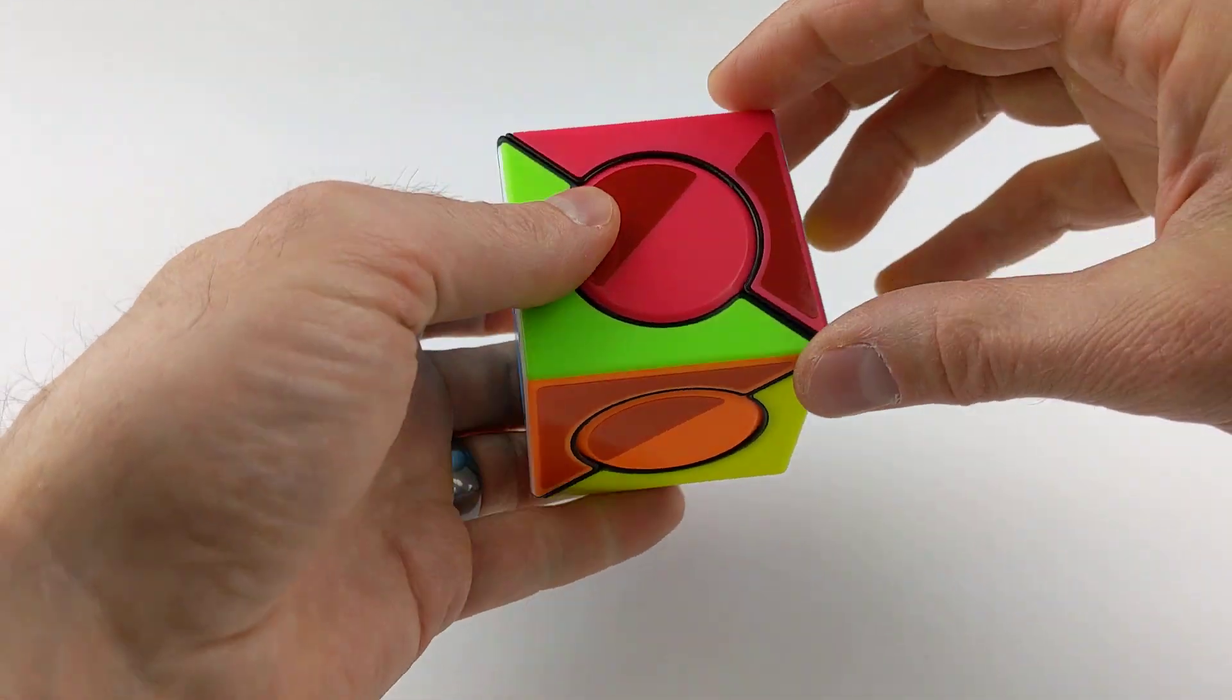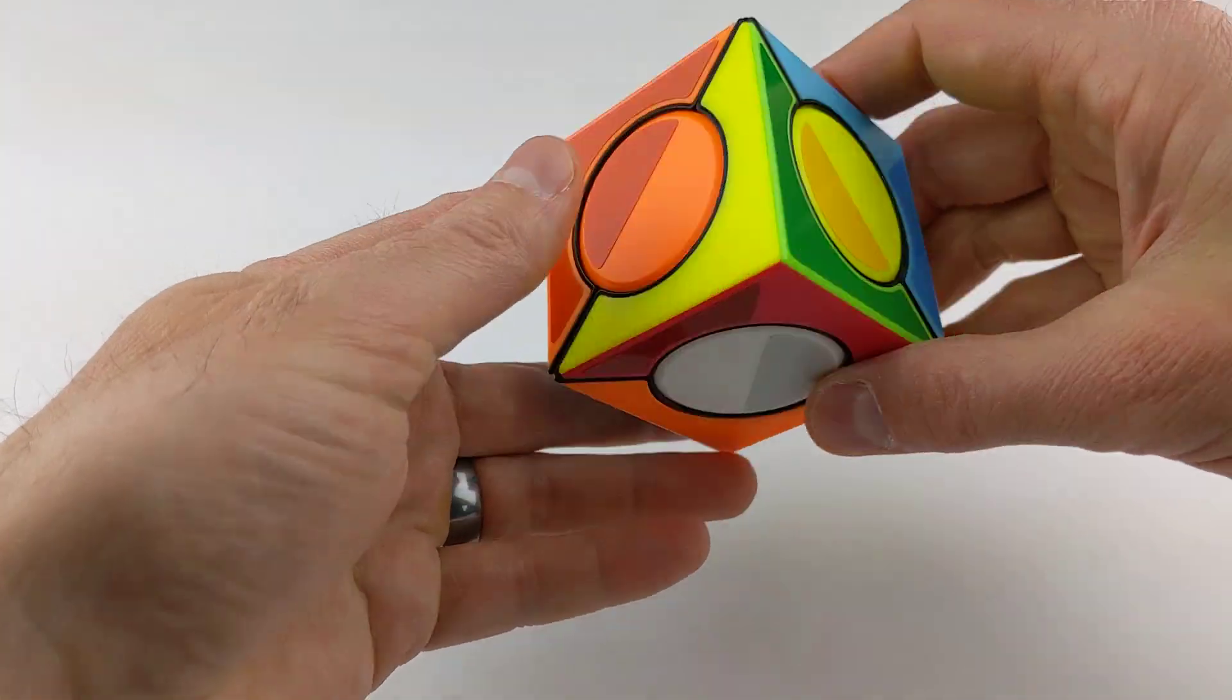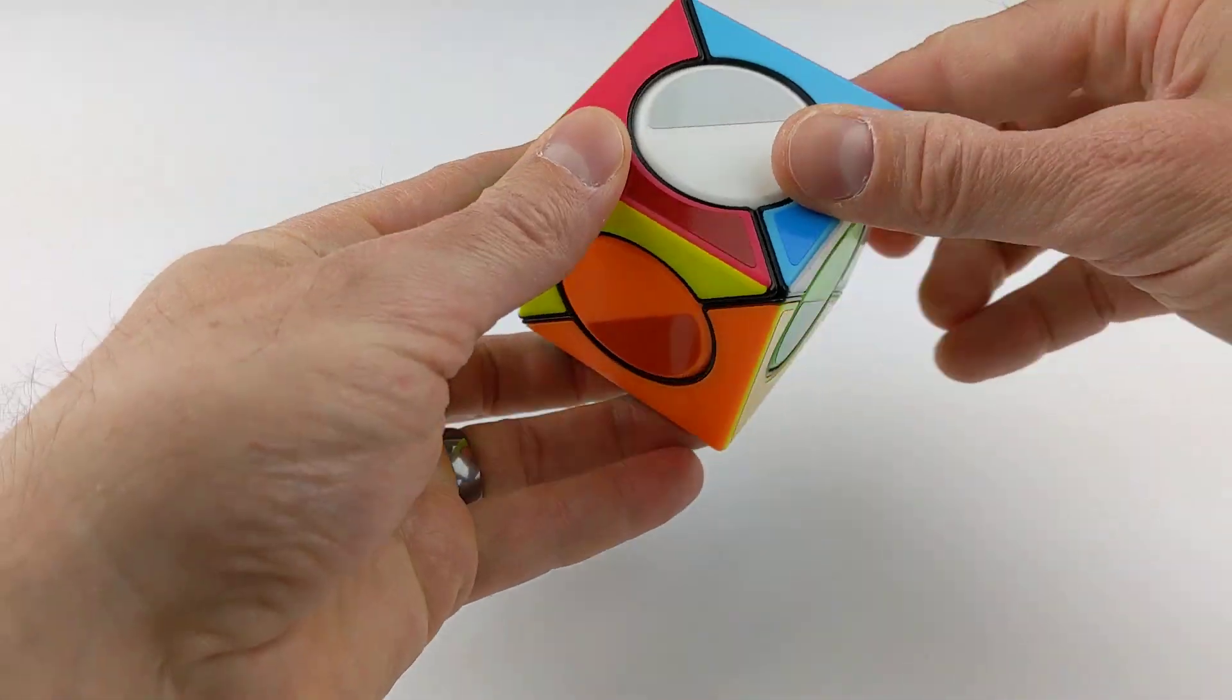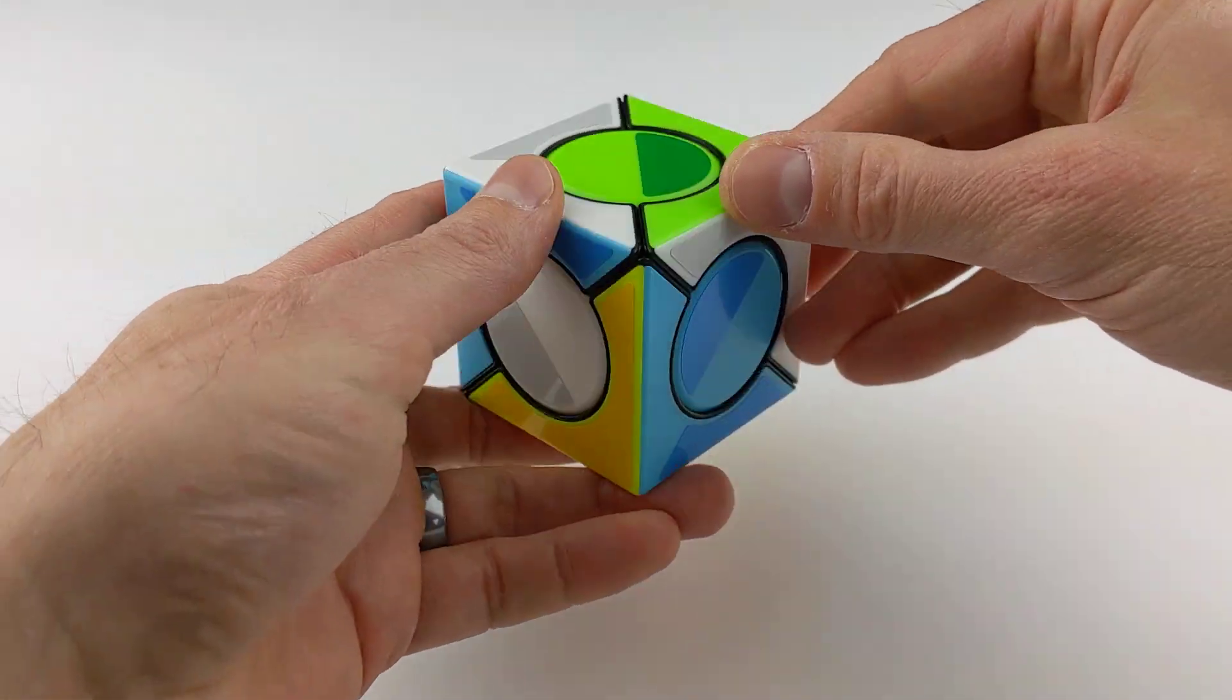And as you can see here with the red face, the central dot can indeed be flipped and will need to be reoriented correctly in order for the puzzle to be solved.